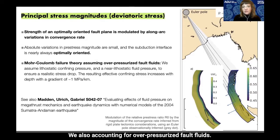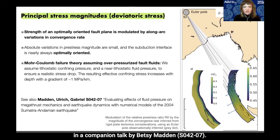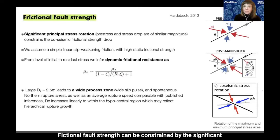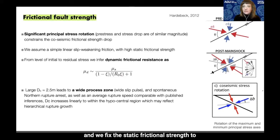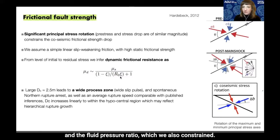We also account for over-pressurized fault fluids, assuming near-lithostatic fluid pressure to ensure a realistic stress drop. The resulting effective confining stress increases with depth following a gradient of one megapascal per kilometer. The effect of over-pressurized fault fluids is further discussed in a companion talk by Betsy Madden, S4207. Frictional fault strength can be constrained by the significant principal co-seismic stress rotation observed during this event, from which we infer that the pre-stress and the stress drop are of similar magnitude. Assuming simple linear slip-weakening friction, we fix the static frictional strength to be high and infer a very low dynamic friction coefficient of between 0.1 and 0.2.